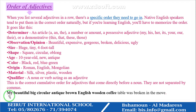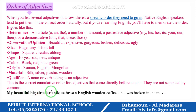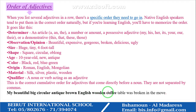Let's look at the full example. 'My' is the determiner, followed by 'beautiful' (the opinion), 'big' (the size), 'circular' (the shape), 'antique' (the age — meaning very old), 'brown' (the color), 'English' (the origin), 'wooden' (the material), then the qualifier 'coffee table' — giving us 'my beautiful big circular antique brown English wooden coffee table.'